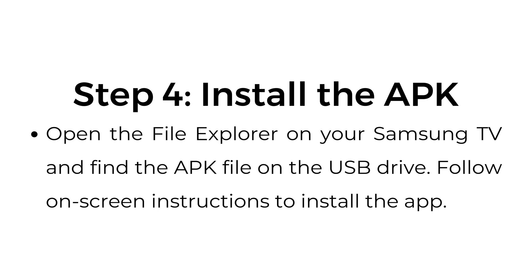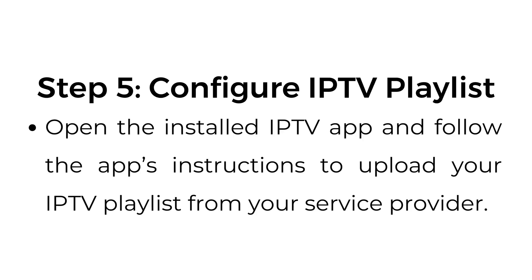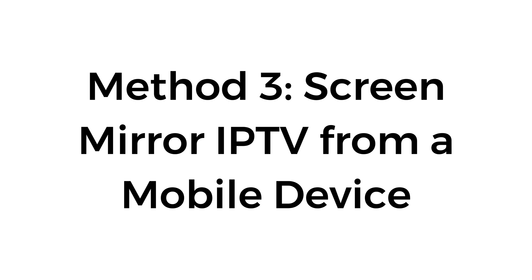Follow the on-screen instructions to install the app. Step number five, configure IPTV playlists. Open the installed IPTV app and follow the app's instructions to upload your IPTV playlist from your service provider. Method number three: screen mirror IPTV from a mobile device.